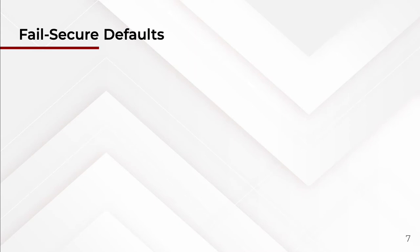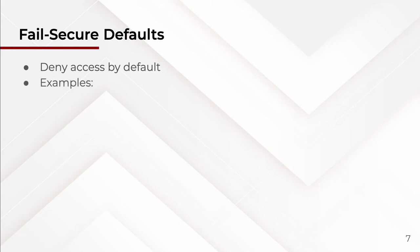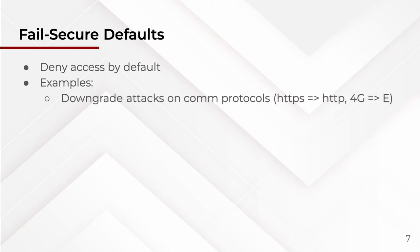The next principle is fail secure defaults. The principle tells you to deny access by default. Good examples of where things are not done with fail-secure defaults are downgrade attacks on communication protocols — downgrading HTTPS to HTTP. Your SSL configuration should make sure people cannot downgrade to HTTP. In mobile networks, you can downgrade from 4G to 3G to EDGE, and once downgraded to EDGE you can eavesdrop on communications, intercepting messages and calls.